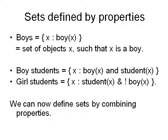Let's look at some more examples. We can define the set boys as the set of x such that x has property boy. Similarly, boy students would be defined as all x such that x is a boy and x is a student. Similarly, girl students would be defined as student(x) and not boy(x). Now we can combine all the properties using boolean functions and get all kinds of sets and subsets.